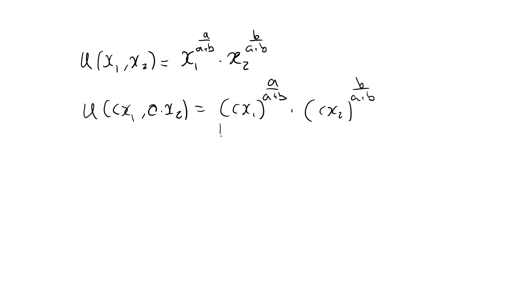In the first term I have a power where the base is the product of two terms, so I can split this into two powers: c raised to a over a plus b times x1 raised to a over a plus b. We do the same thing with the second term: c raised to b over a plus b times x2 raised to b over a plus b.